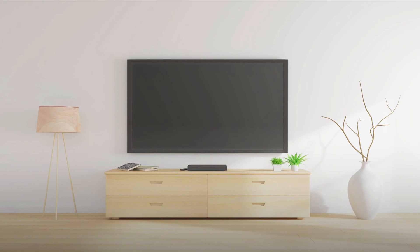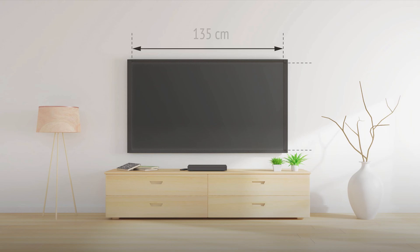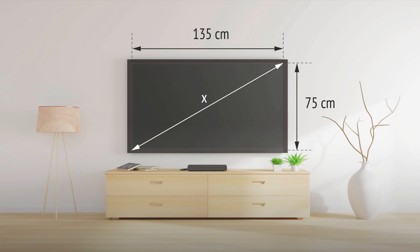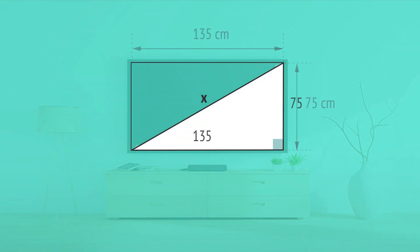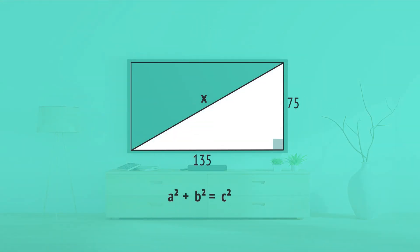The size of a TV is usually given as the diagonal length of its screen. If a TV has a screen width of 135 cm and a screen height of 75 cm, how can we calculate the diagonal length x? If we draw a right-angled triangle with the information given, we can use Pythagoras to calculate the unknown x, the length of the longest side.